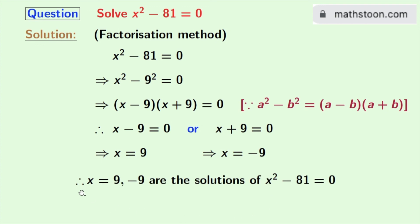So finally, x equals 9 or minus 9 are the solutions of the equation x square minus 81 equals 0.